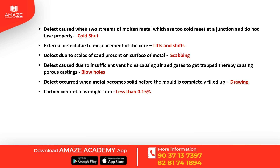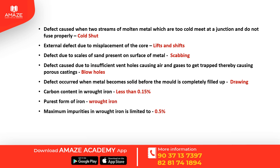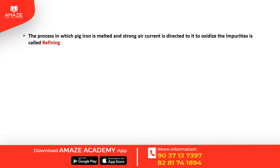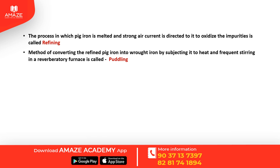Wrought iron has a carbon content of less than 0.15% and is the purest form of iron. Maximum impurities are limited to 0.5%. Wrought iron is manufactured in a reverberatory furnace. Pig iron is melted and a strong air current is passed through it to oxidize impurities in a refining process.